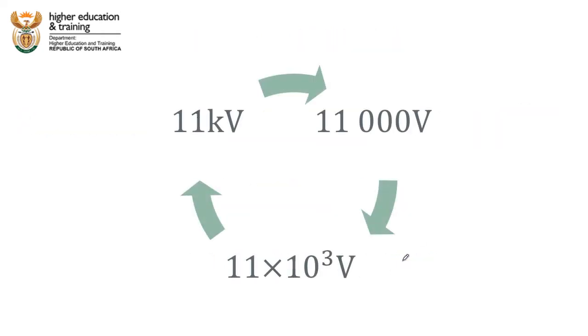So 11 kilovolts is the same thing as 11,000 volts, which is the same thing as 11 times 10 to the power 3 volts. All of these numbers mean exactly the same thing. There is the 1,000, here is the 1,000 and here is the 1,000.